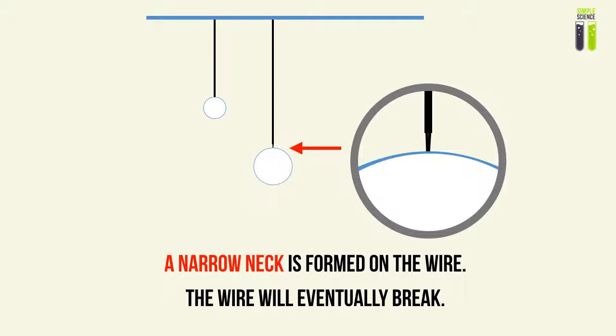Instead of having the wire just simply extending, what you're basically having is a cross section of the wire narrowing out, creating a narrow neck from the cross section to support this object.